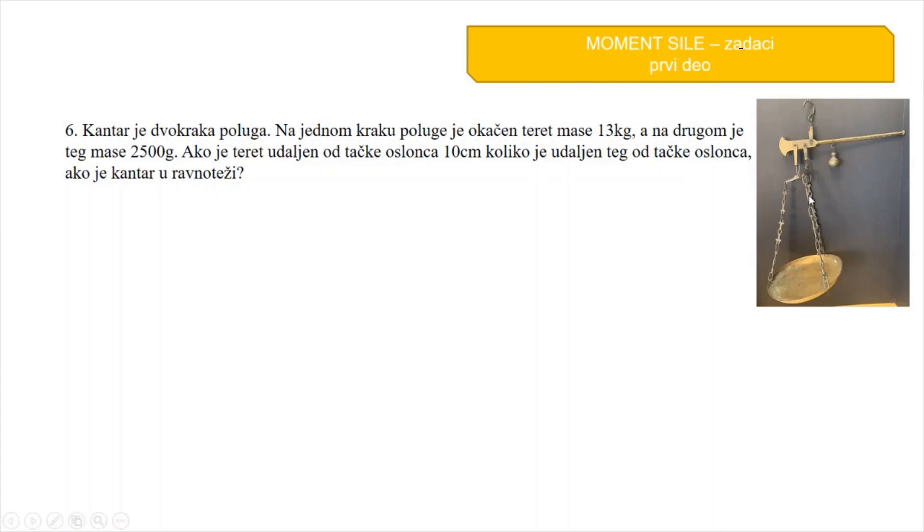Ovdje na slici imamo jedan kantar, ovo je tas i na njega stavljamo teret. Ovo ovdje je teg, a ovdje je tačka oslonca. Hajde prvo da vidimo šta nam je dato. Masa tereta je 13 kg, a masa tega 2500 grama, a to je 2.5 kg. L1 je udaljenost, odnosno krak tereta, a traži se koliki je krak tega. Crtamo sliku.